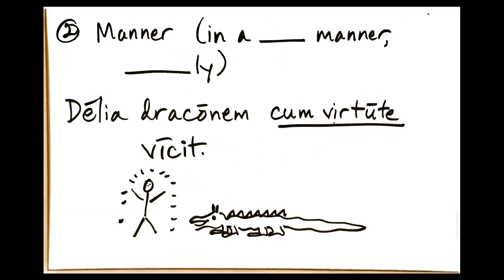Delia draconem cum virtute vicit. So, cum virtute, with courage. Pretend that this represents courage. And she did it in a courageous manner. She didn't do it by means of courage. Maybe she did it by means of beating the dragon at a game of tic-tac-toe or something.